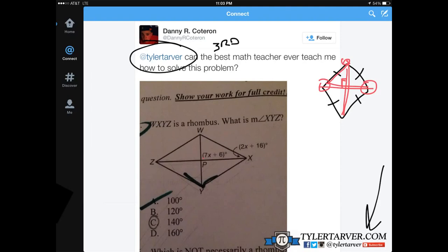Okay. So that means that this right here is a right angle, which means that what does this equal? 7X plus 6 equals 90. So we just solve it. We subtract 6 from both sides. 7X equals 84. And then we divide 84 by 7 and we get 12.